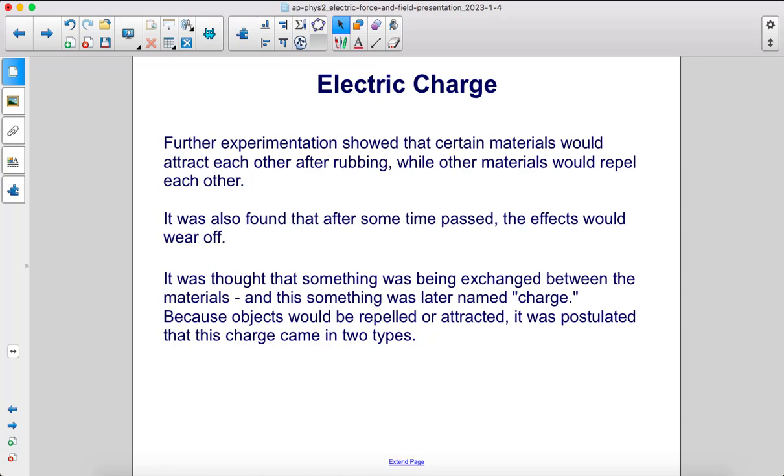It was thought that something was being exchanged between the materials, and this something was later named charge. Because objects would be repelled or attracted, it was postulated that this charge came in two types.